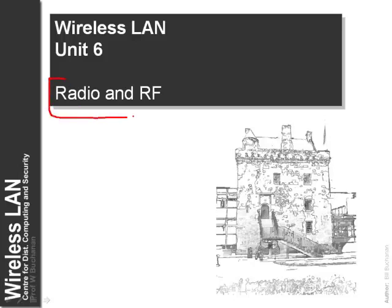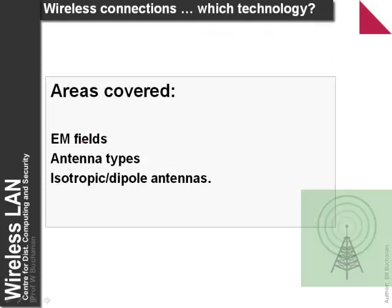In this lecture, we'll look at one of the key areas of wireless, which is radio waves, or RF. The areas we'll cover are electromagnetic fields, antenna types, and the differentiation between isotropic and dipole antennas.